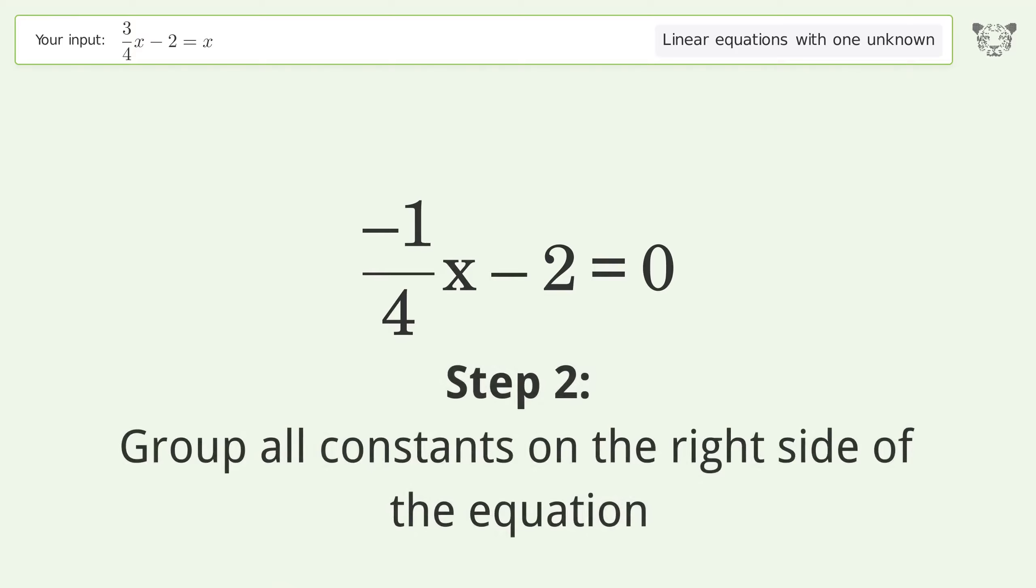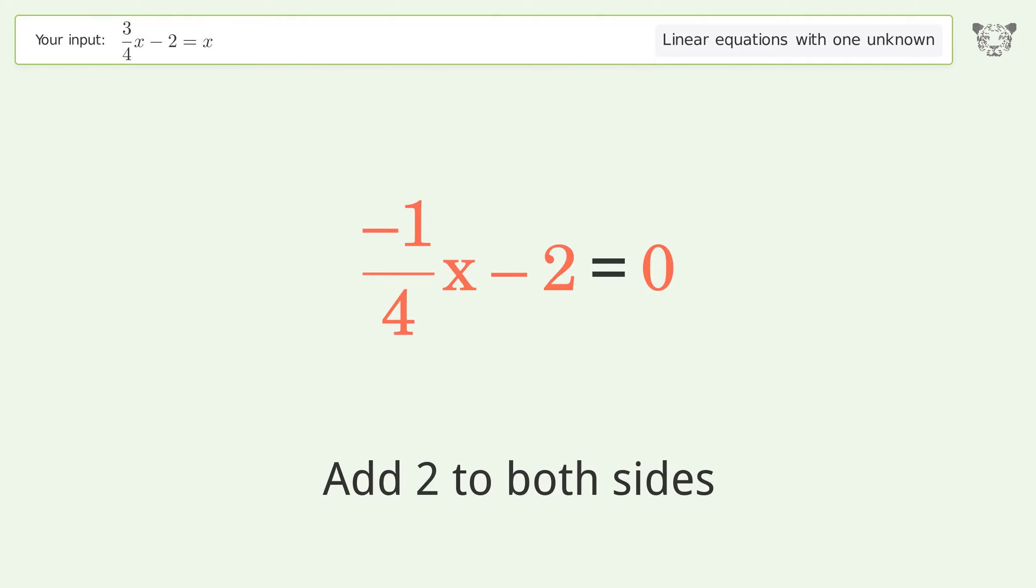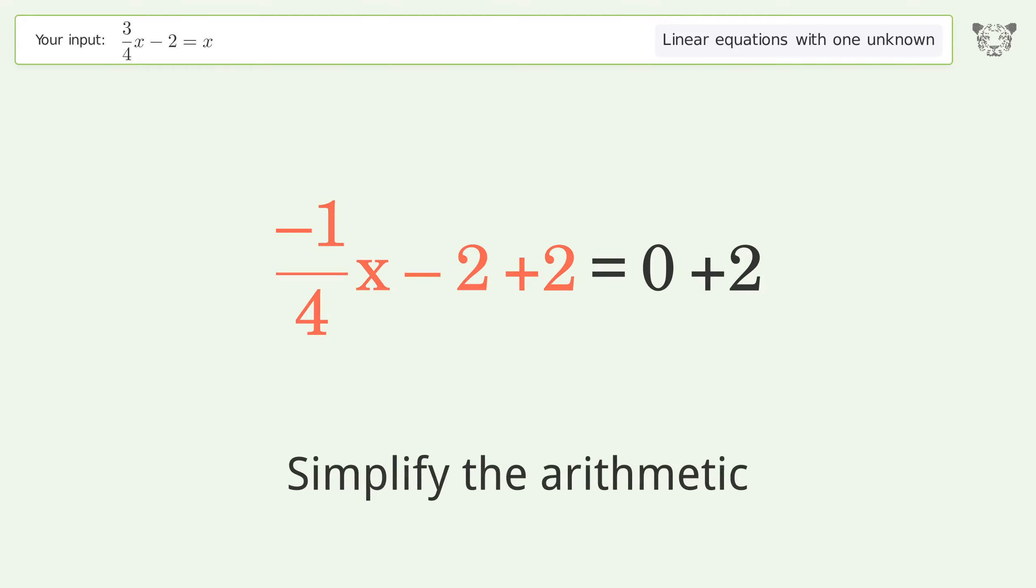Group all constants on the right side of the equation. Add 2 to both sides. Simplify the arithmetic.